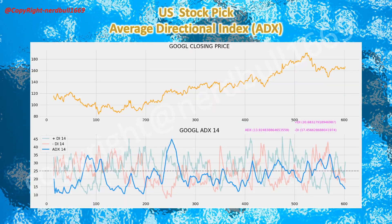Now coming to the technical analysis using the Average Directional Index (ADX). Alphabet's ADX is below 20, indicating a weak trend, but the positive DI is above the negative DI, suggesting a bullish upside. We might see investors coming back with more buying, which should help push the ADX higher as the stock price goes higher as well.